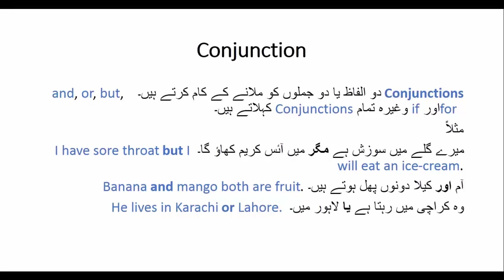Conjunction دو الفاظ یا دو جملوں کو ملانے کا کام کرتا ہے۔ مثال: میرے فریج میں food ہے مگر میں آئس کریم کھاؤں گا — یہاں دو sentences ہیں اور ان کو جوڑنے کے لیے 'but' استعمال ہو رہا ہے جو کہ ایک conjunction ہے۔